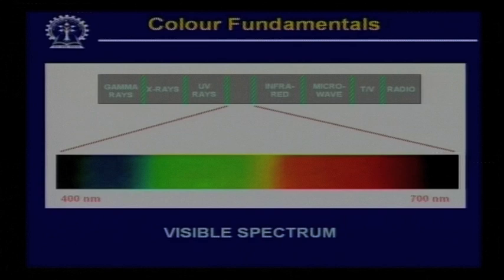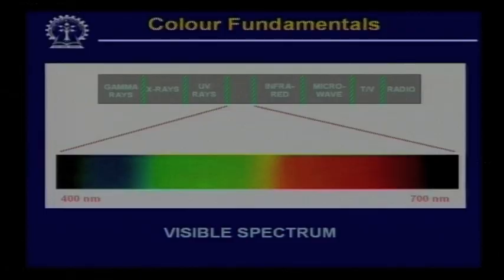Whenever light falls on an object and the object reflects light of all wavelengths in the visible spectrum in a balanced manner — that is, all wavelengths are reflected in appropriate proportion — then that object will appear white. Depending upon the predominant wavelength within the visible spectrum, the object will appear as a coloured object, and its colour will depend on what wavelength of light is predominantly reflected by that particular object surface.